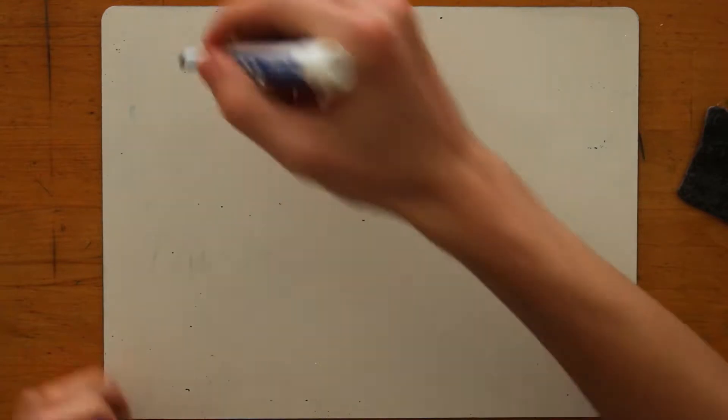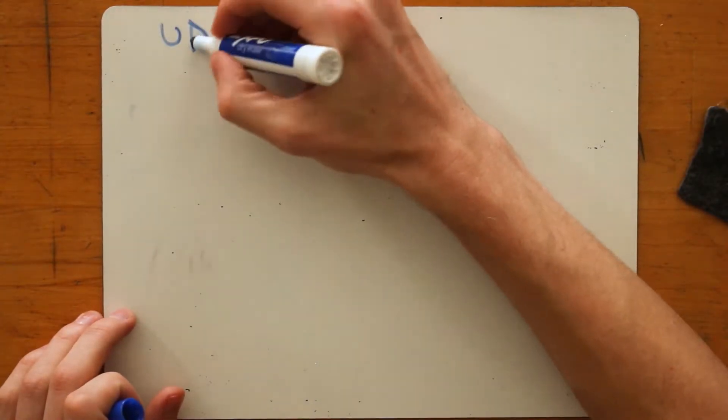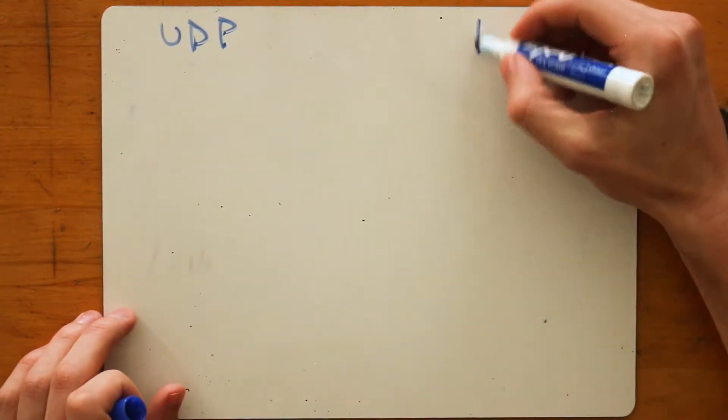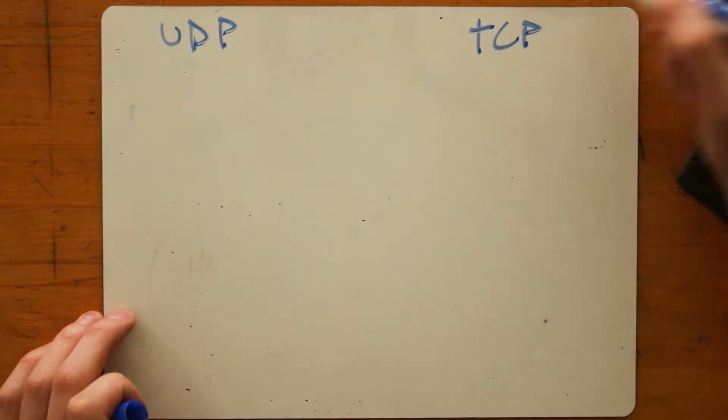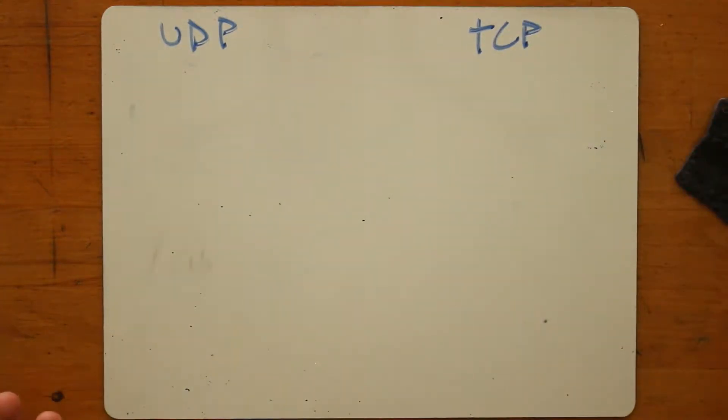Okay, so the thing I want to do in this video is just examine the UDP and TCP headers and describe why they're different and what the differences are.